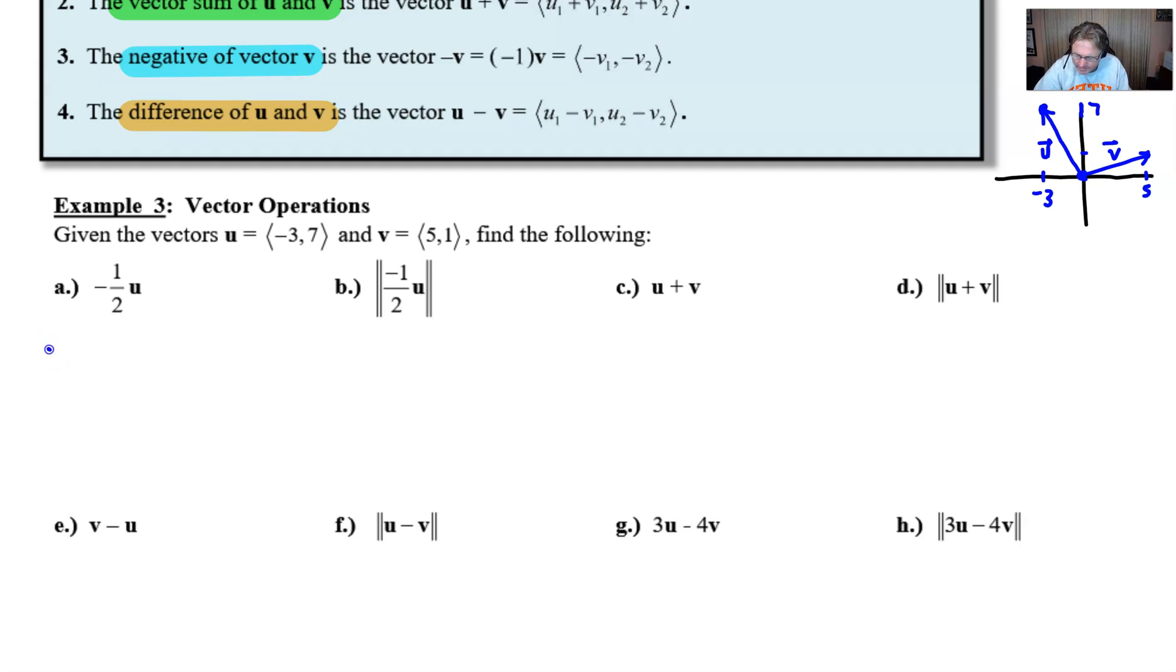If we're going to take negative half as a scalar multiple, I'm just going to multiply it through vector u. Negative half times negative three would be positive three halves, and then negative half times positive seven would be negative seven halves. And boom, there you have it. That would be your final answer for the vector operation for part a.